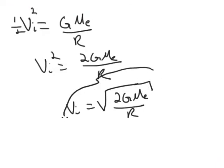So this is our final result, and what's interesting that you can note is that this is independent of pretty much anything about the rocket. It's the gravitational constant, the mass of the Earth, and the radius of the Earth.